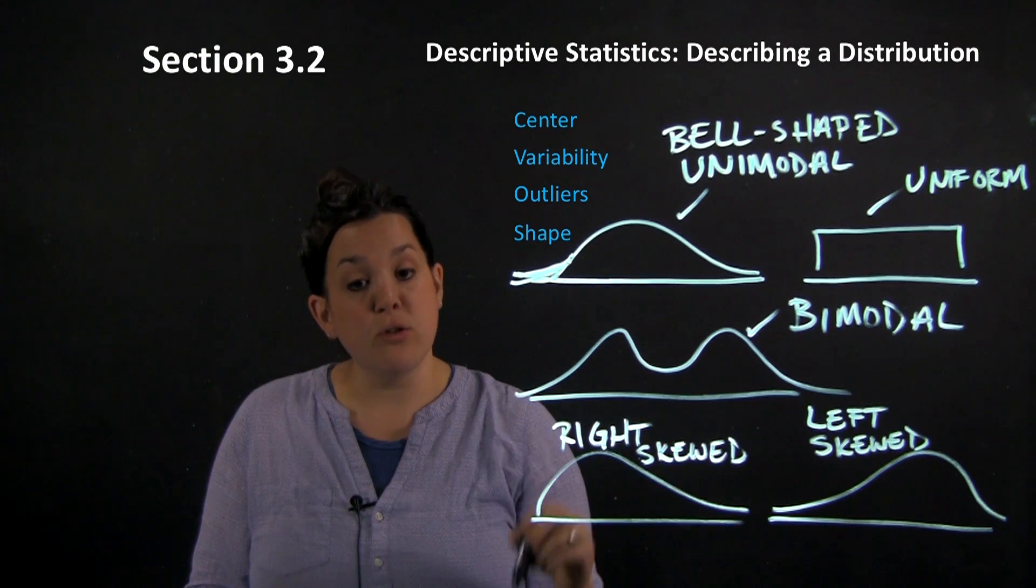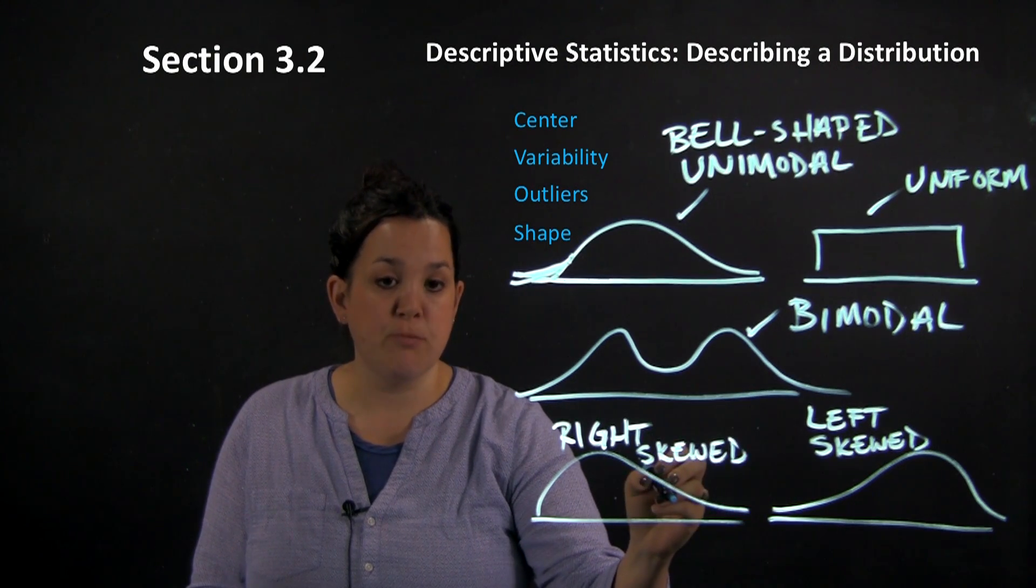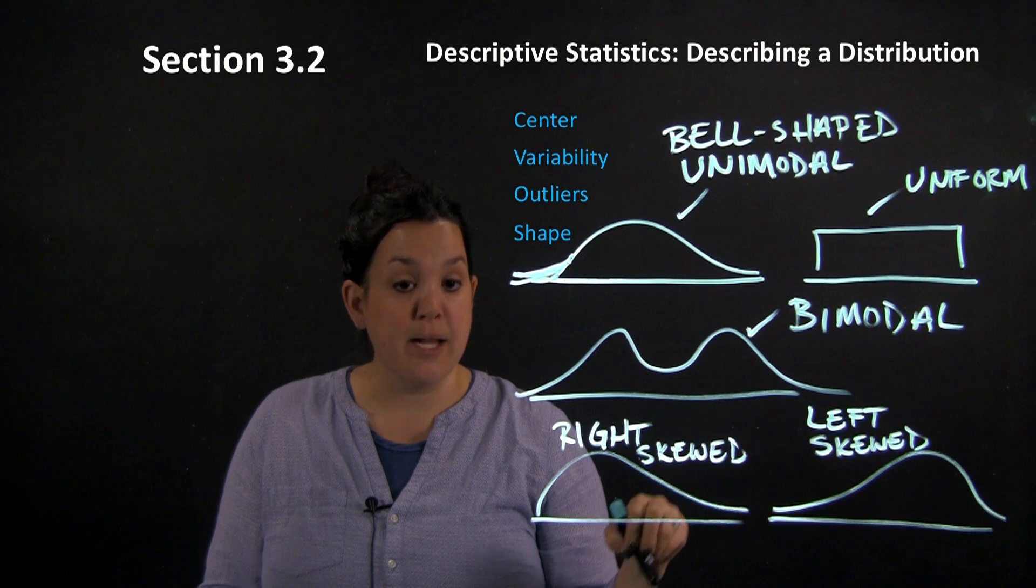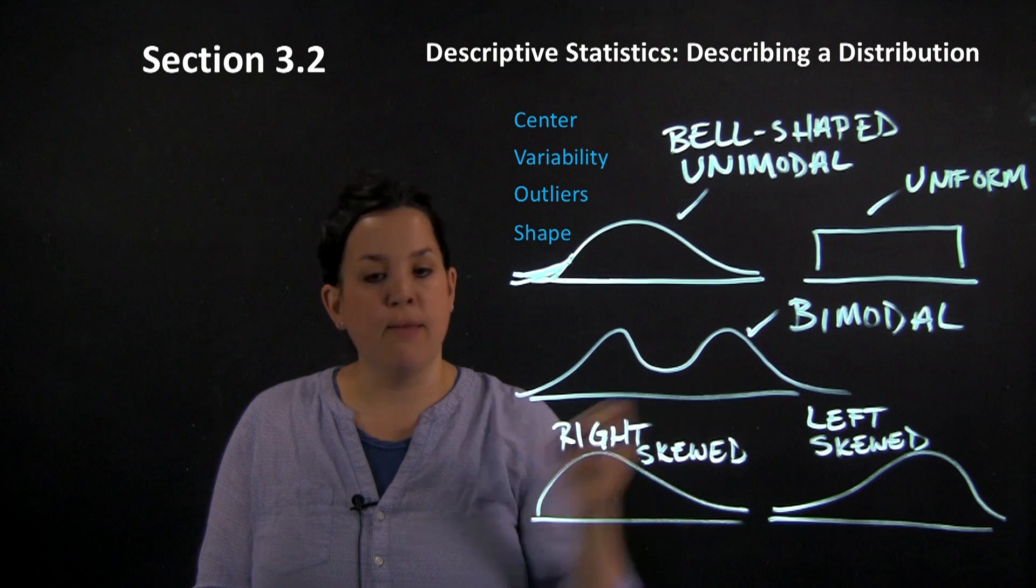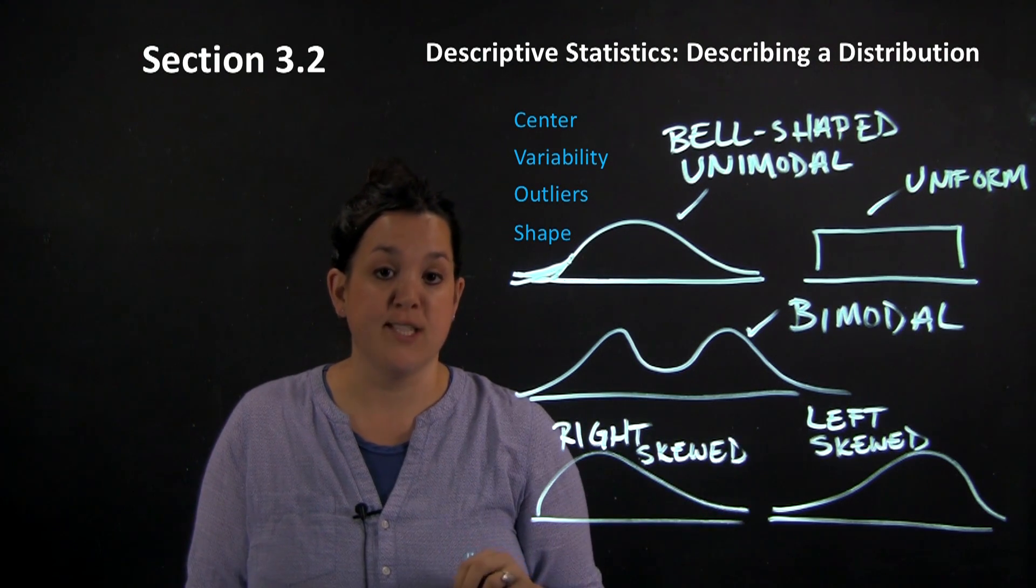Sometimes right skewed is referred to as positively skewed because it's happening at the high end of the distribution. Similarly, left skewed is sometimes described as negatively skewed because it's happening at the lower end of the distribution. But I think right and left are more intuitive because that's the direction or the location where the skewness is happening.